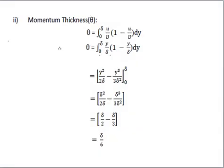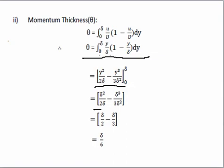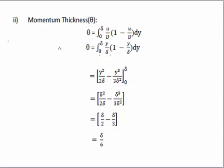Now similarly we find the momentum thickness. The momentum thickness θ = ∫₀^δ (u/U)(1 - u/U) dy. Putting u/U = y/δ, the equation becomes ∫₀^δ (y/δ)(1 - y/δ) dy. Opening the bracket gives y/δ - y²/δ², and integrating gives y²/(2δ) - y³/(3δ²), with limits 0 to δ. Substituting the upper limit: δ/2 - δ/3 = δ/6. So the momentum thickness θ equals δ/6.